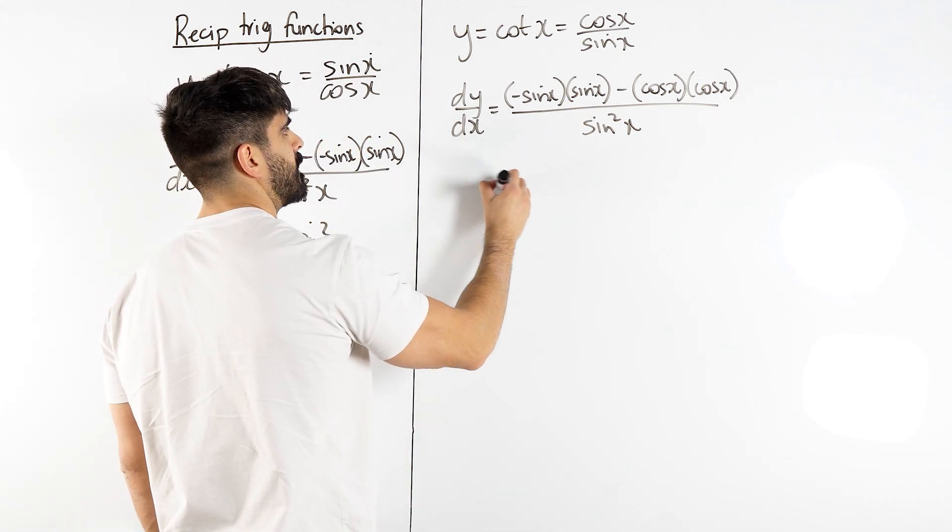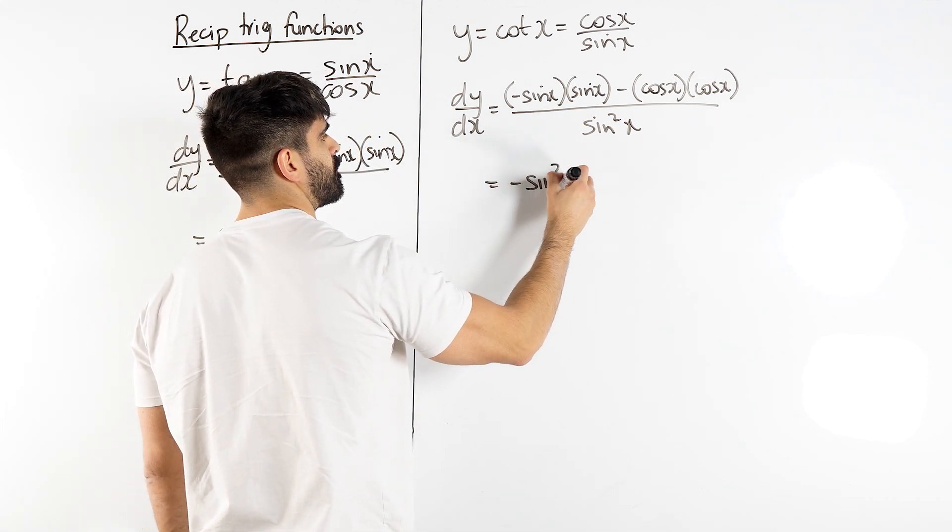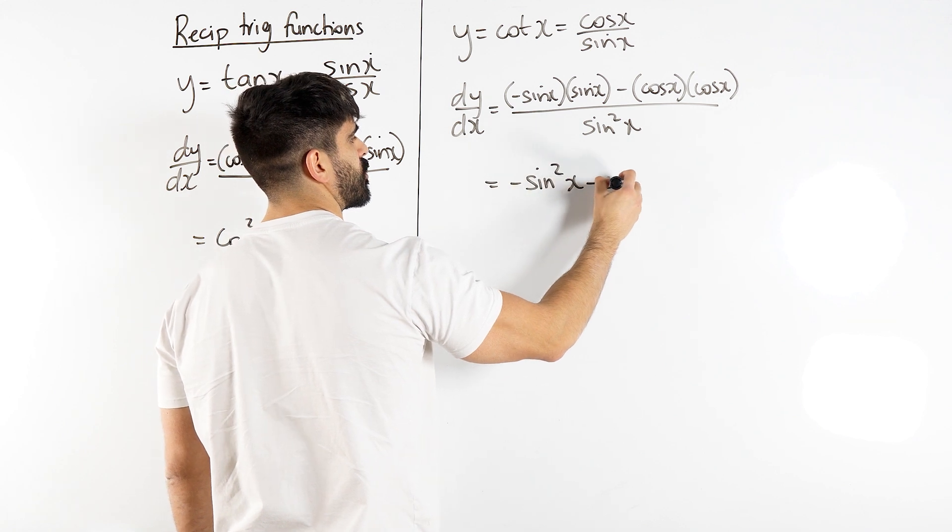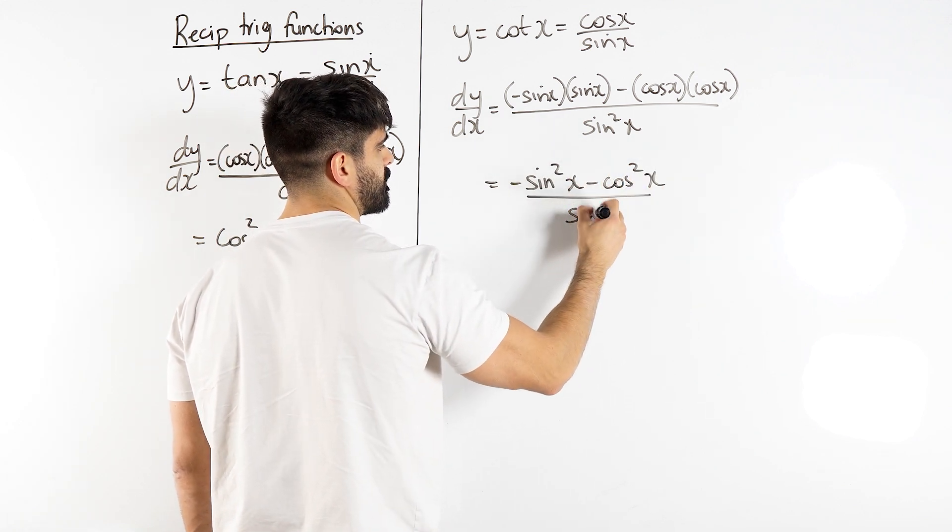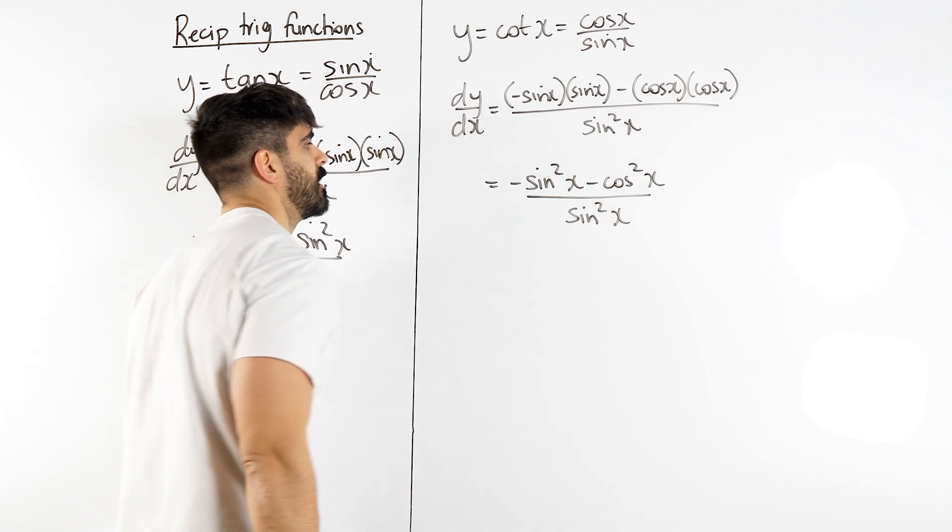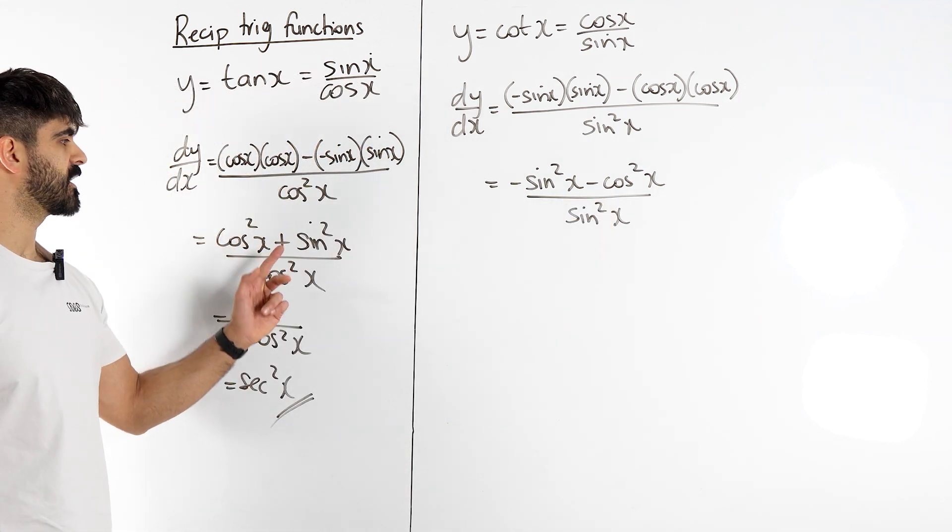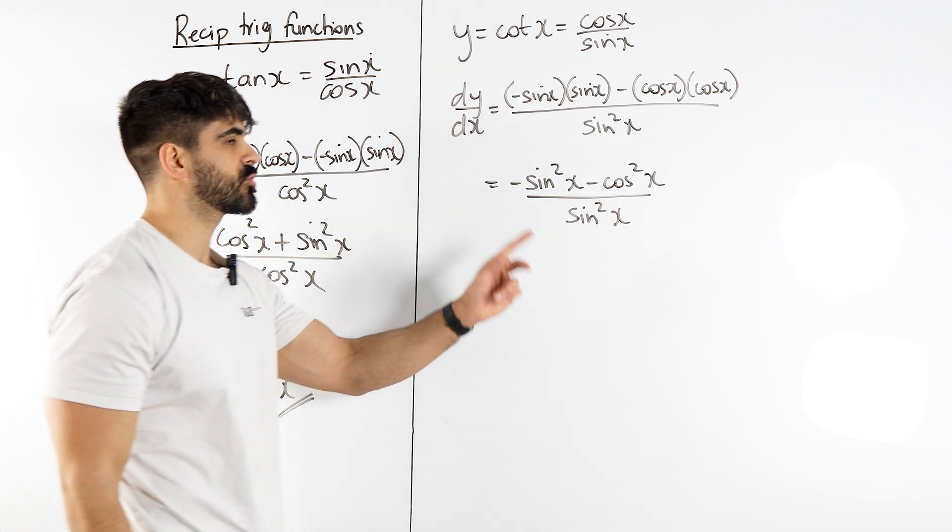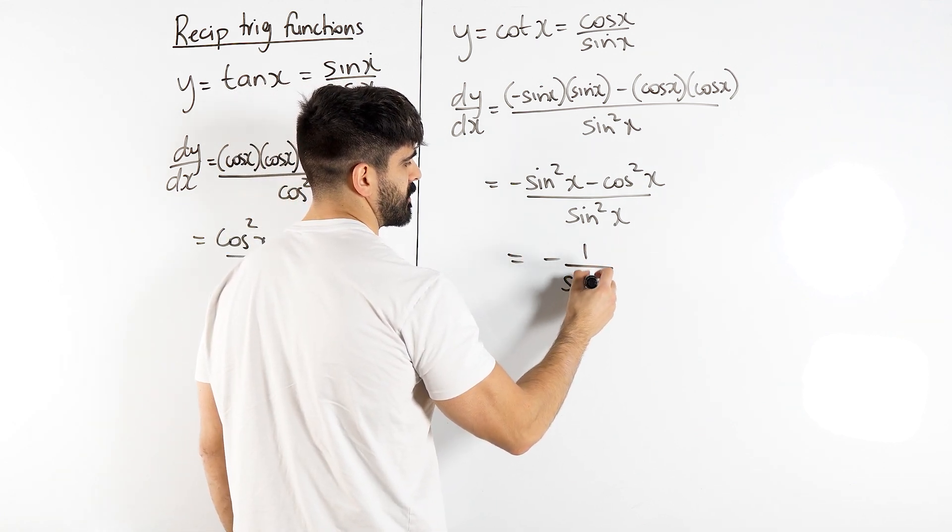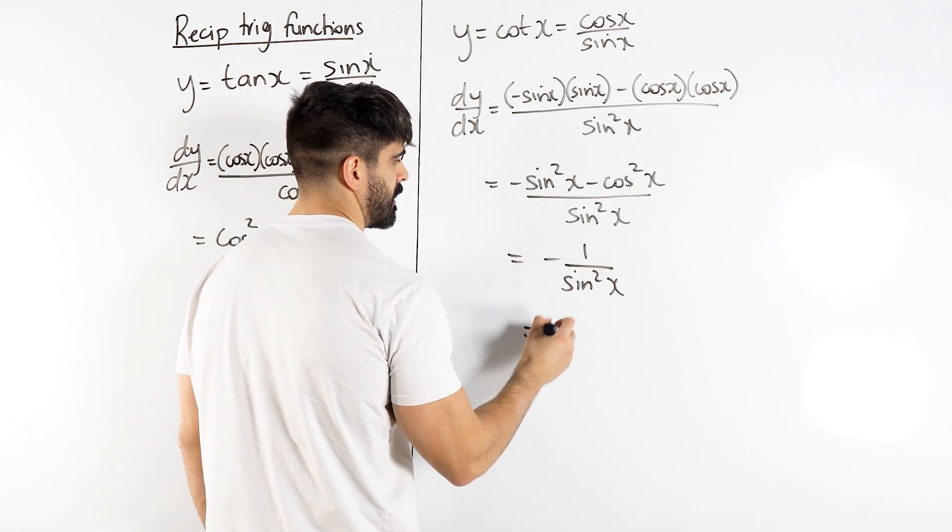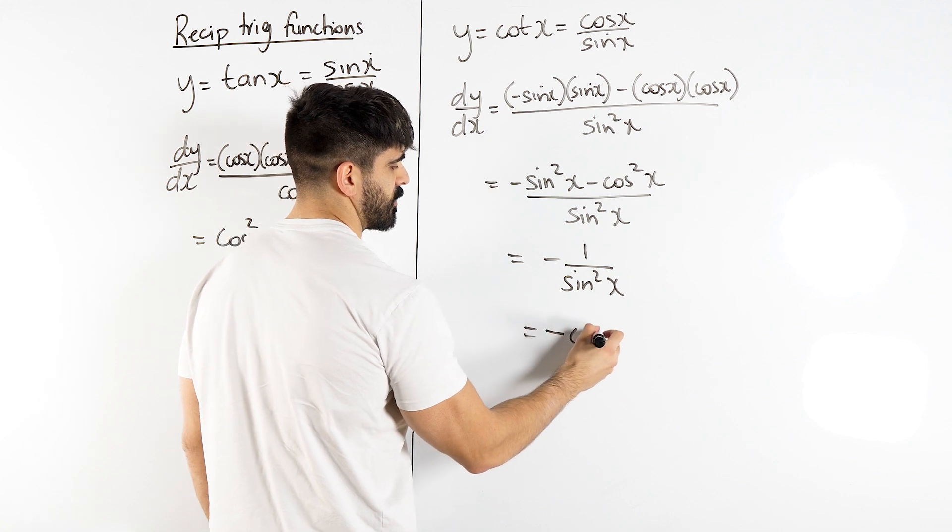On the top we have minus sin squared, then minus cos squared, all over sin squared. Now minus sin squared minus cos squared is minus one over sin squared. So we get the negative of cosec squared.